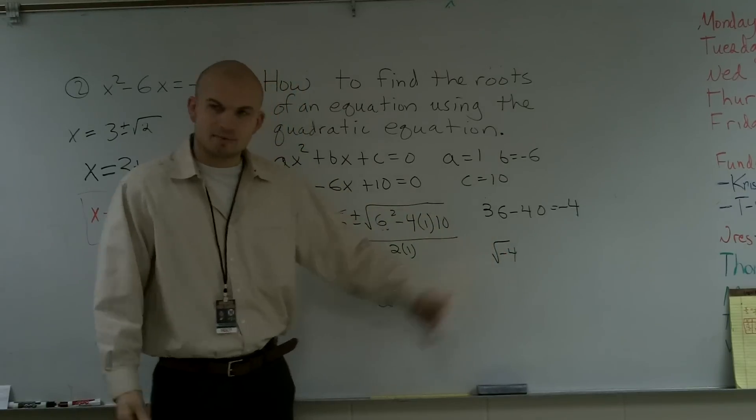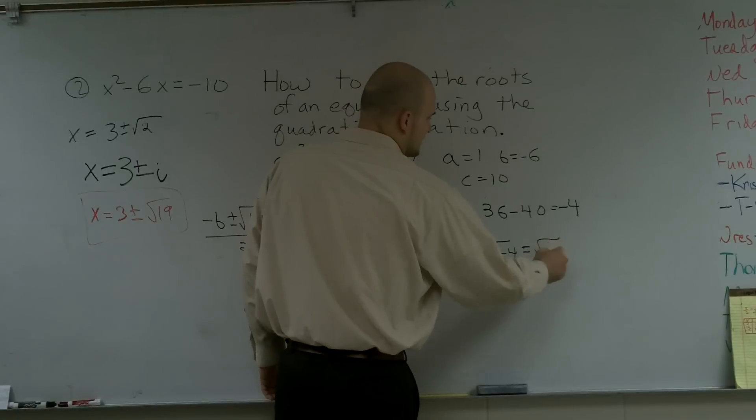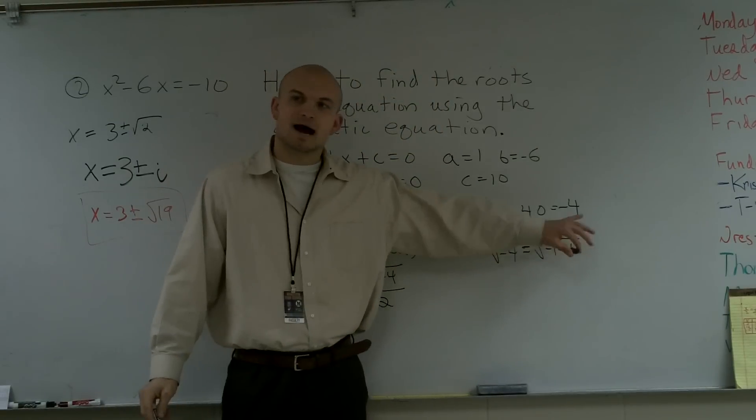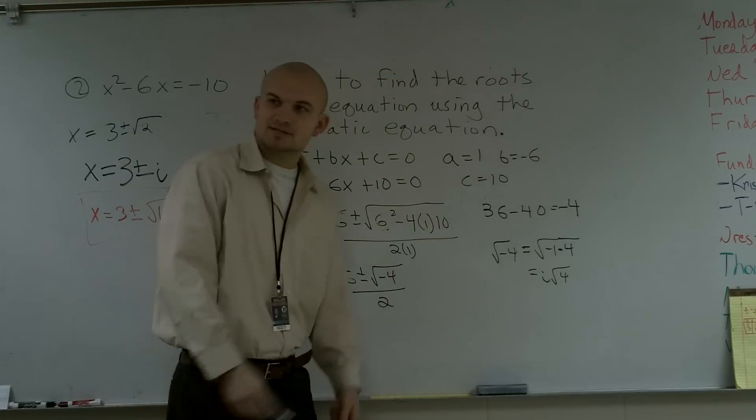Remember, we cannot take the square root of a negative number. However, we can break this down into the square root of negative 1 times 4. And we remember that the square root of negative 1 is i. So, this can be broken into i times square root of 4. And obviously, the square root of 4 is 2.